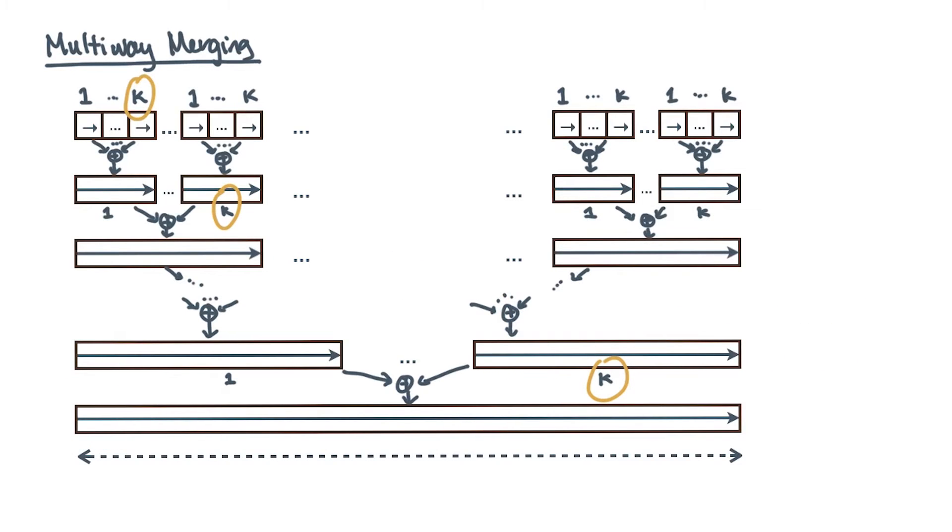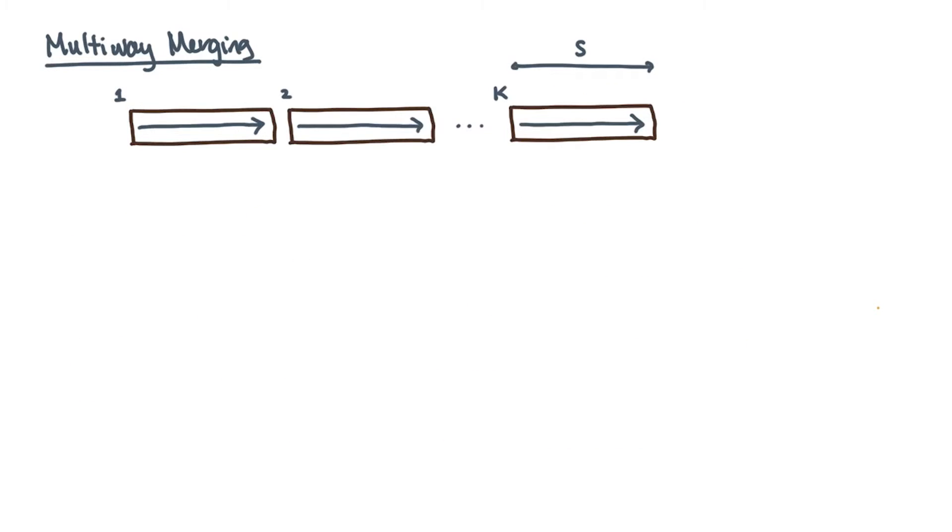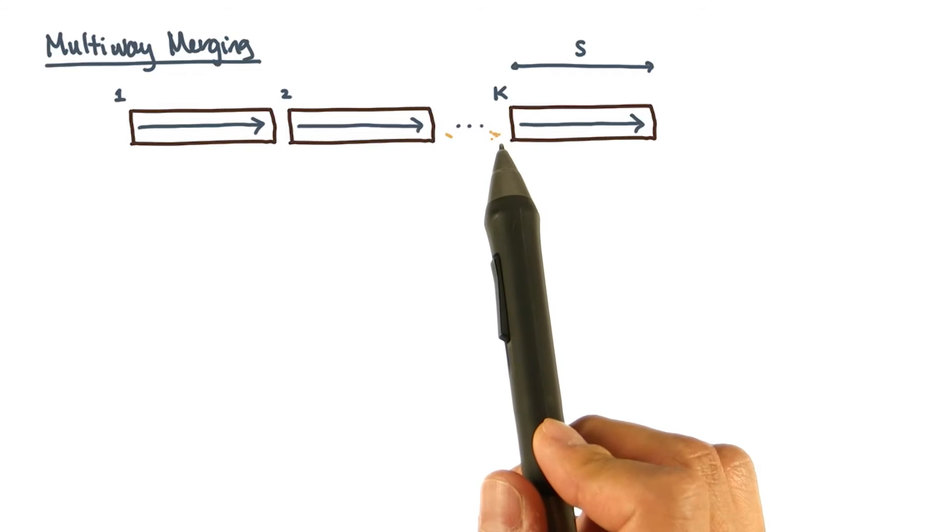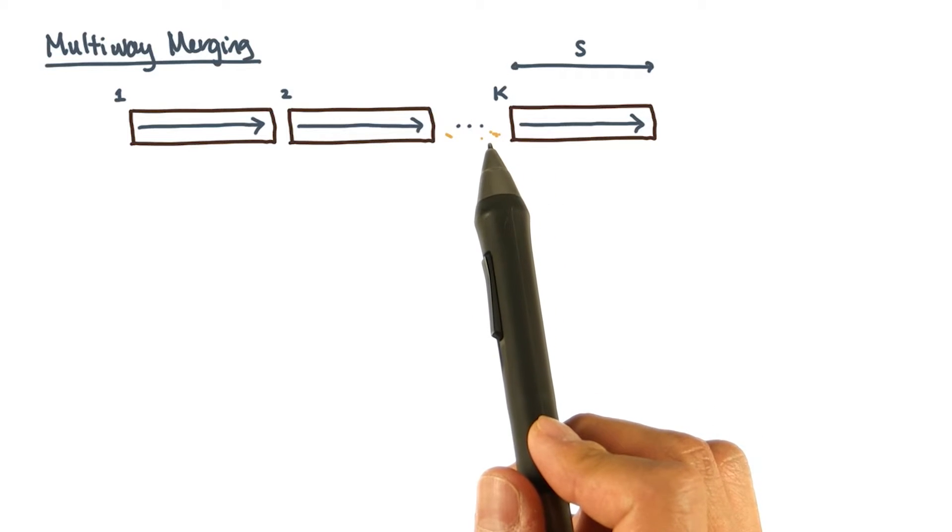A natural idea is to merge not two runs at a time, but a bunch of runs, let's say K. In fact, let's start by considering one of these K-way merges. You're given a set of K input runs, each of size S. Let's say they start in slow memory, and they're sorted in ascending order. Let's also suppose that you've chosen this value of K so that at least K plus one blocks of size L will fit in fast memory.